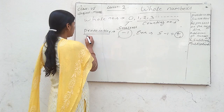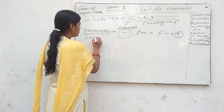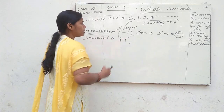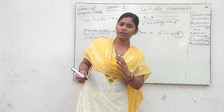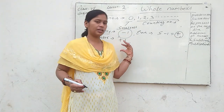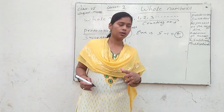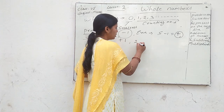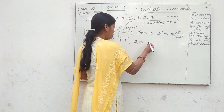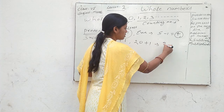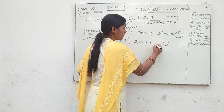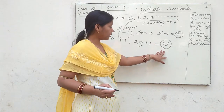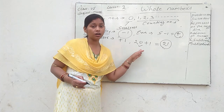Similarly, the successor means adding 1 to a given number. For example, take the number 20. 20 plus 1 equals 21, so 21 is the successor of 20.